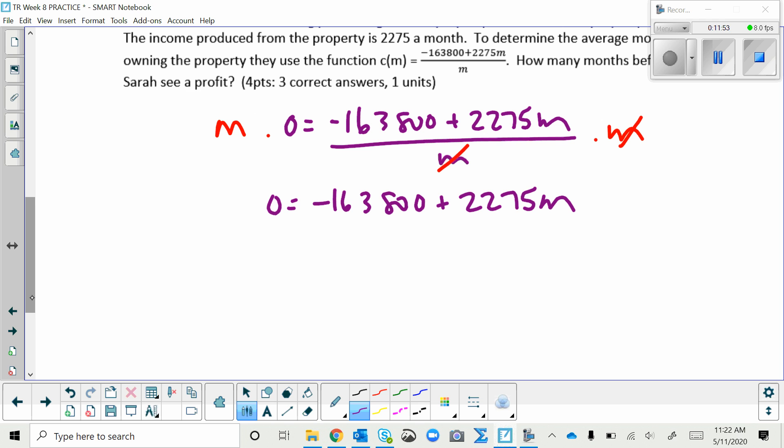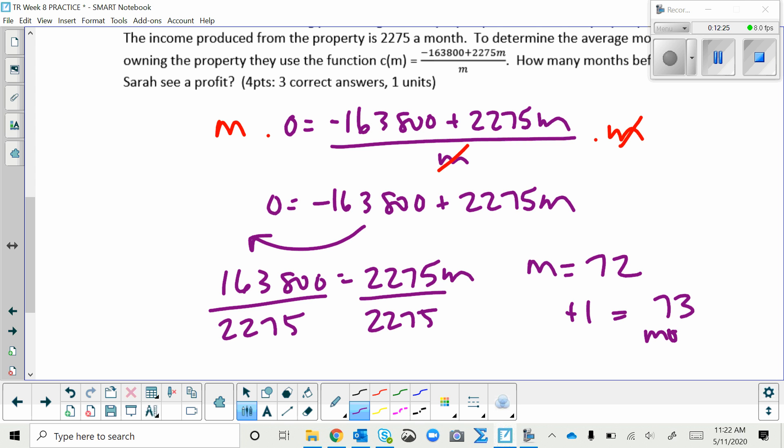Add the 16,300 over here. Divide by the 22.75. And M equals 72. Remember, that's 72 months to break even. Okay, 72 months to pay off the cost of the property. How long to see a profit is one month later. So you add one and your final answer is 73.